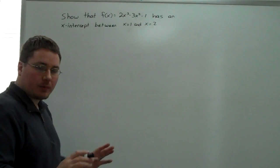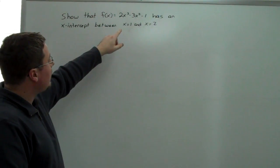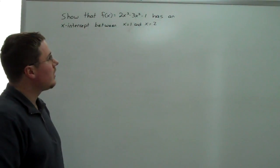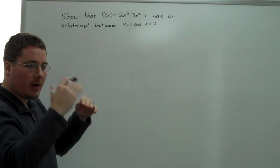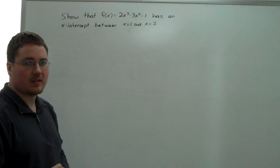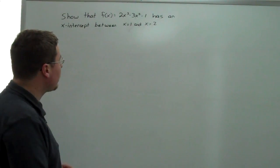So just to give you an outline, what we're going to do is we're going to plug in 1 and 2 to get the y values at those locations, and we're going to show that in order for us to go from one y value to another, we must cross the x-axis. That's what the intermediate value theorem is for.